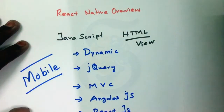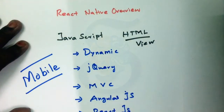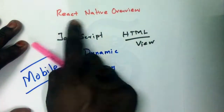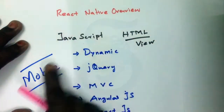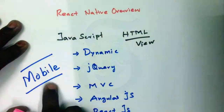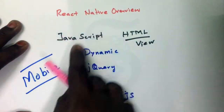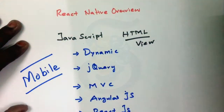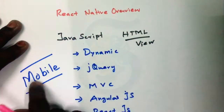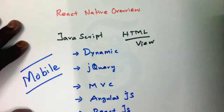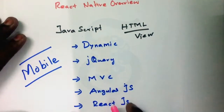Hello everyone, let's talk about React Native overview. You can also use this language for a mobile application. React Native is based on JavaScript. If you know JavaScript, you can use it directly for a mobile application. I have a JavaScript overview, let's go through it.